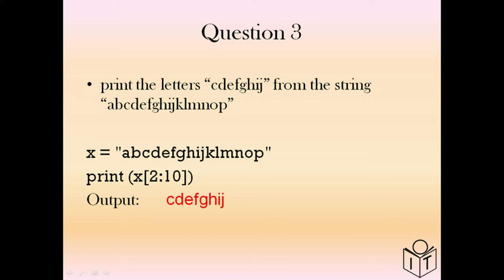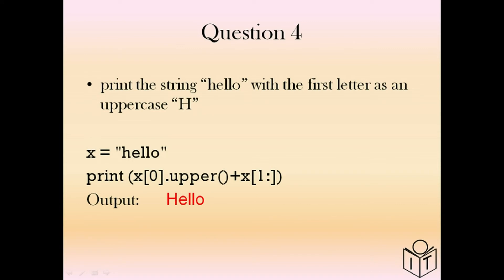For question three, we're going to slice the string from A to P, getting C to J. C will be index 2 because we start at zero, one, two — so it's X[2:10]. For question four, we have the string 'hello' and want to print it with the first letter uppercase. We use two methods: slicing and the built-in upper function. We take X[0].upper() to make the uppercase H, then concatenate the rest of the string from X[1:] — so you don't need to know the string length, just put 1 colon and it prints the rest.